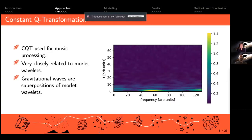The first approach is the constant Q-transformation. It's basically a transformation into frequency domain like Fourier transform, and it gives us this nice picture on the right. It's widely used in music processing and very closely related to Morlet wavelets. Gravitational waves are basically a superposition of these Morlet wavelets, so this approach seems very promising.